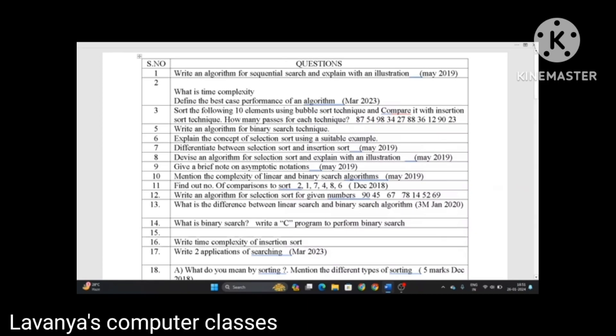First question is write an algorithm for sequential search and explain with an illustration, came from May 2019. Sequential search means linear search. Second question is what is time complexity? Define the best case performance of an algorithm. This question is from March 2023.